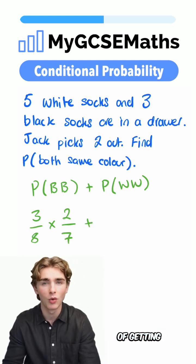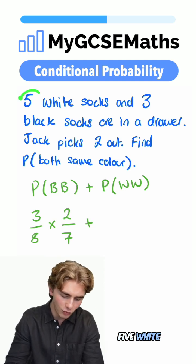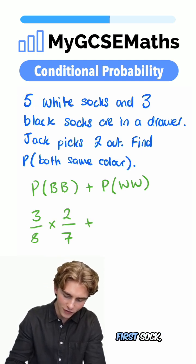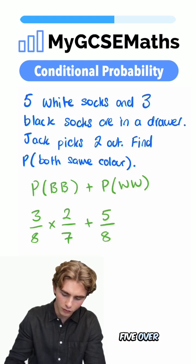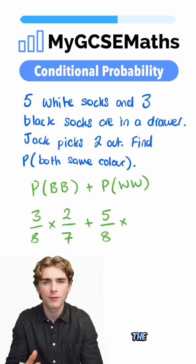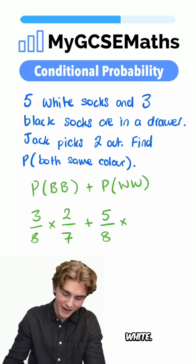Now, we're going to add to that the probability of getting white and white. There are five white socks in the drawer, so picking our first sock, the probability that it's white is 5/8. We multiply that by the probability the next sock is white. Now there are four white socks out of a total of seven.